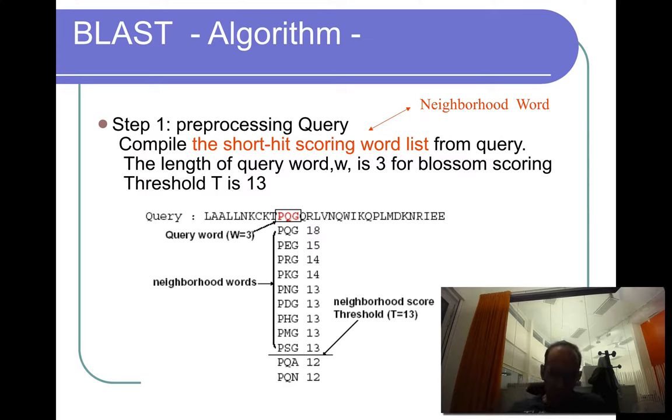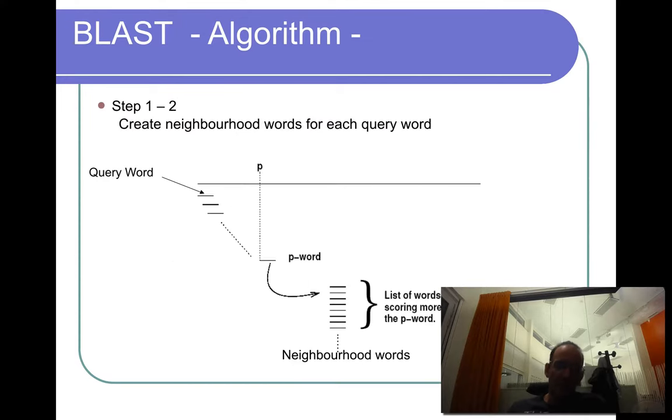But anyway, basically you would find more hits with using this than you would using only the identity matches. You have more diagonals to extend. And then the second step is - so step one, you would find the neighbors. This is very exactly as in FASTA.